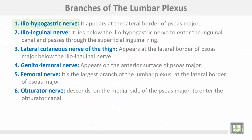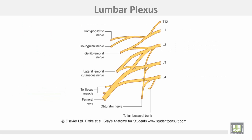Branches of the lumbar plexus: Number one, the ilio-hypogastric nerve appears at the lateral border of the psoas major. The ilio-inguinal nerve lies below the ilio-hypogastric to enter the inguinal canal and passes through the superficial inguinal ring. The lateral cutaneous nerve of the thigh appears at the lateral border of the psoas major, below the ilio-inguinal nerve. The genito-femoral nerve appears on the anterior surface of the psoas major muscle. The femoral nerve, the largest branch of the lumbar plexus, appears at the lateral border of the psoas major muscle. The obturator nerve descends on the medial side of the psoas major to enter the obturator canal.